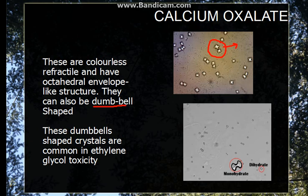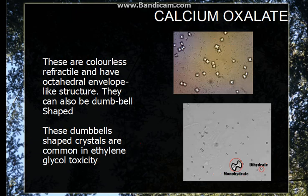Calcium oxalate crystals can be dihydrate or monohydrate. If they are monohydrate, then the shape is dumbbell shape. In ethylene glycol poisoning, calcium oxalate crystals are excreted into the urine, and in this case they are mostly dumbbell-shaped crystals. This was the calcium oxalate crystal.